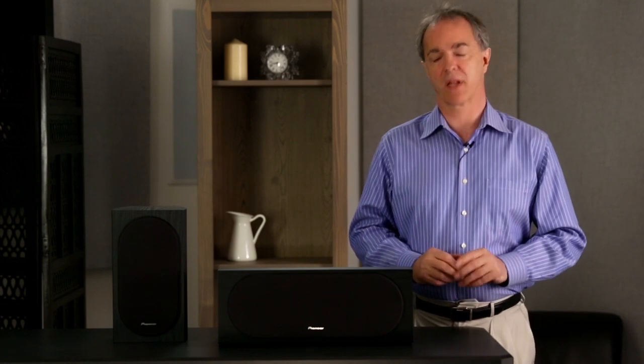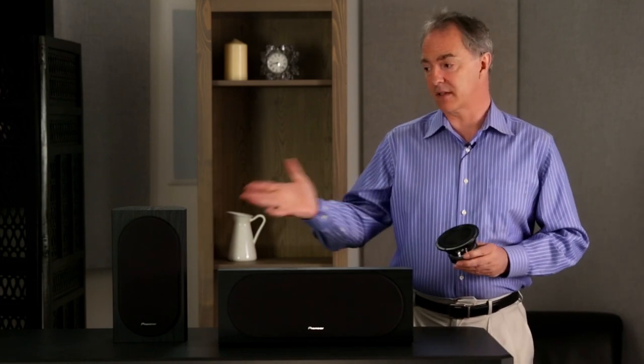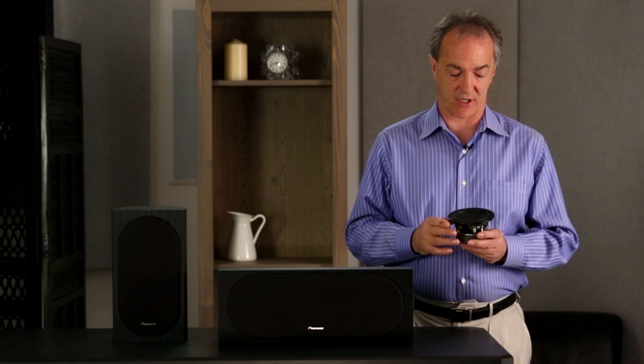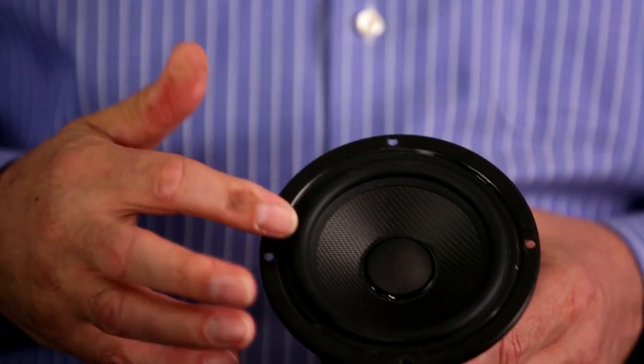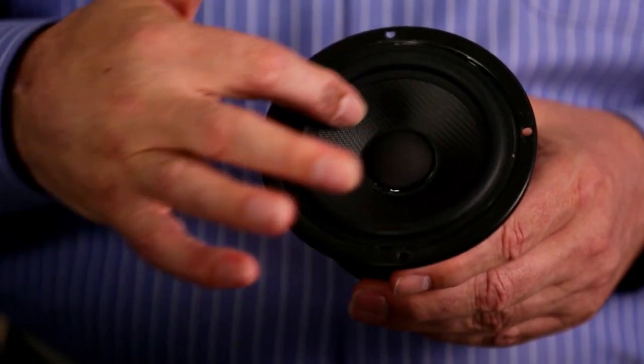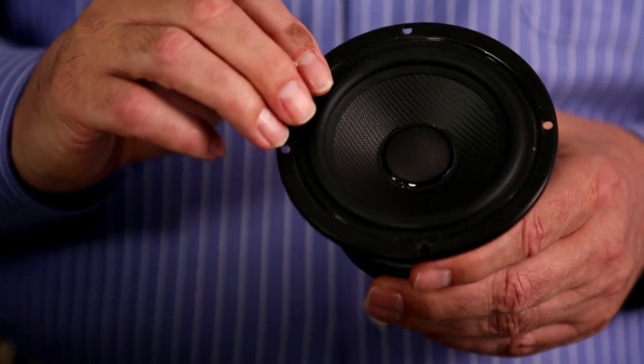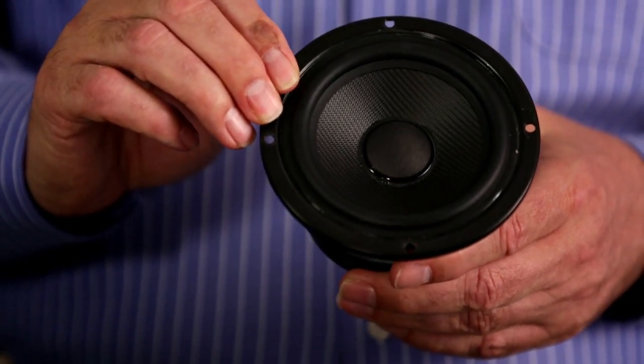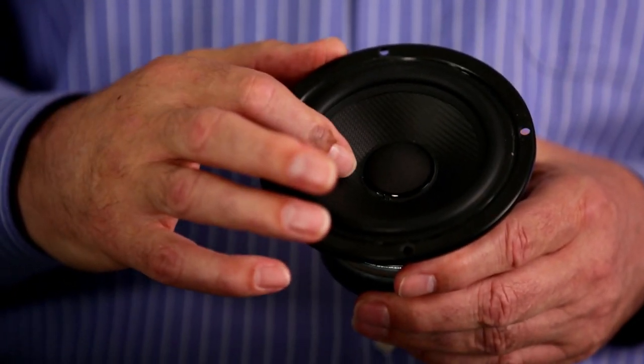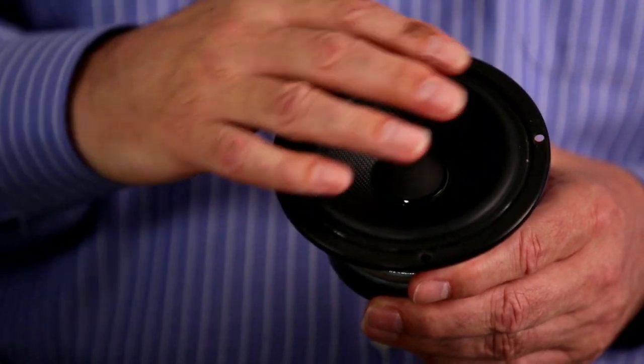For the base driver in the bookshelf and also in the centre channel, I have a new cone that is a structured surface cone material. We've embossed a pattern into the cone to give it better rigidity for low frequencies but smooth out the break-up modes at higher frequencies. This allows us to more easily transition to the tweeter, combined with a harder dust cap to control the resonances at the higher frequencies.